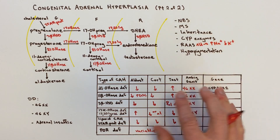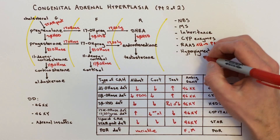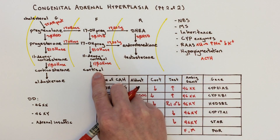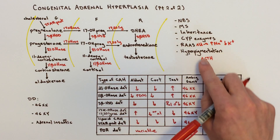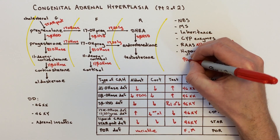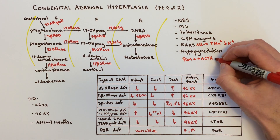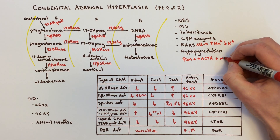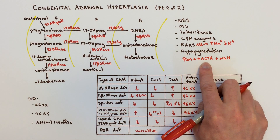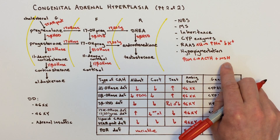The final concept is hyperpigmentation, which is a feature of some of these disorders. The reason is that when cortisol is not made, ACTH is elevated because you don't get the negative feedback, so you keep pumping out ACTH. ACTH is derived from POMC — pro-opiomelanocortin — which is cleaved into ACTH plus MSH, melanocyte-stimulating hormone. If you're producing too much ACTH, you're probably also producing too much MSH, meaning the individual can become hyperpigmented.